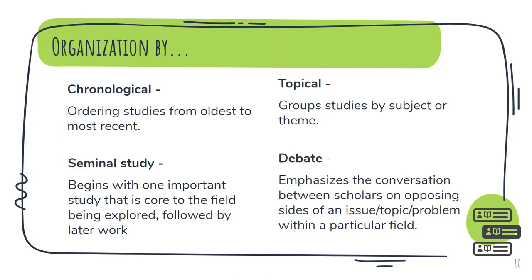As you become more familiar with the literature, you'll want to start thinking about the organizational structure of your lit review. Common organizational themes include: chronological, which is ordering studies from oldest to most recent, useful when a field shows clear development over time; topical, which groups studies by subject or theme, useful for a large body of literature that does not have one or two studies that stand out or a clear chronological development; seminal study, which begins with one important study that is core to the field being explored, followed by later work, useful when one study is central in laying the groundwork for all future research; and debate, which emphasizes the conversation between scholars on opposing sides of an issue within a particular field, useful when there are clear opposing views on a topic.